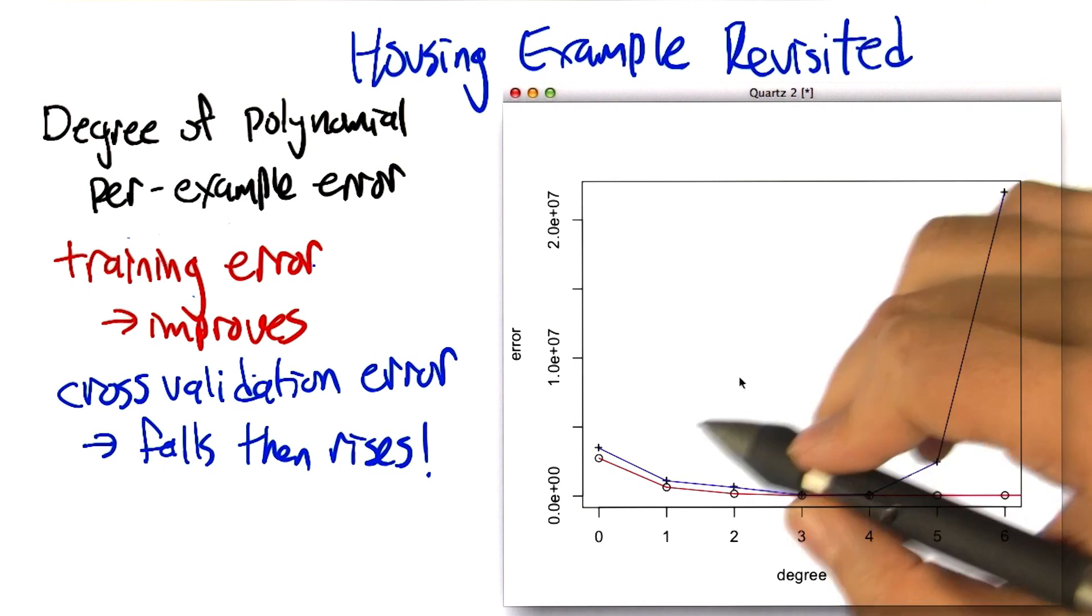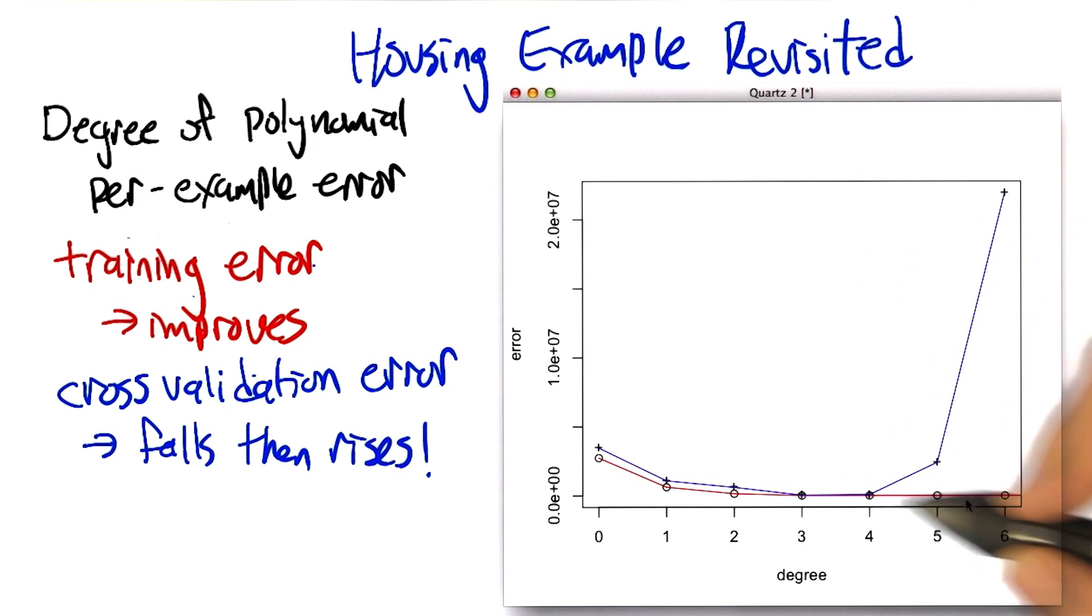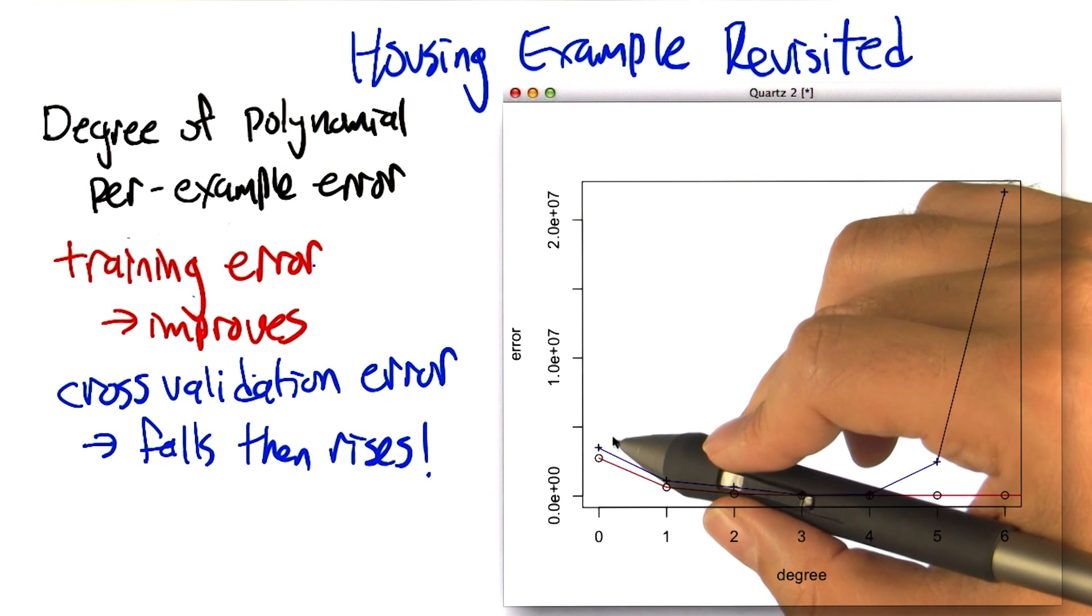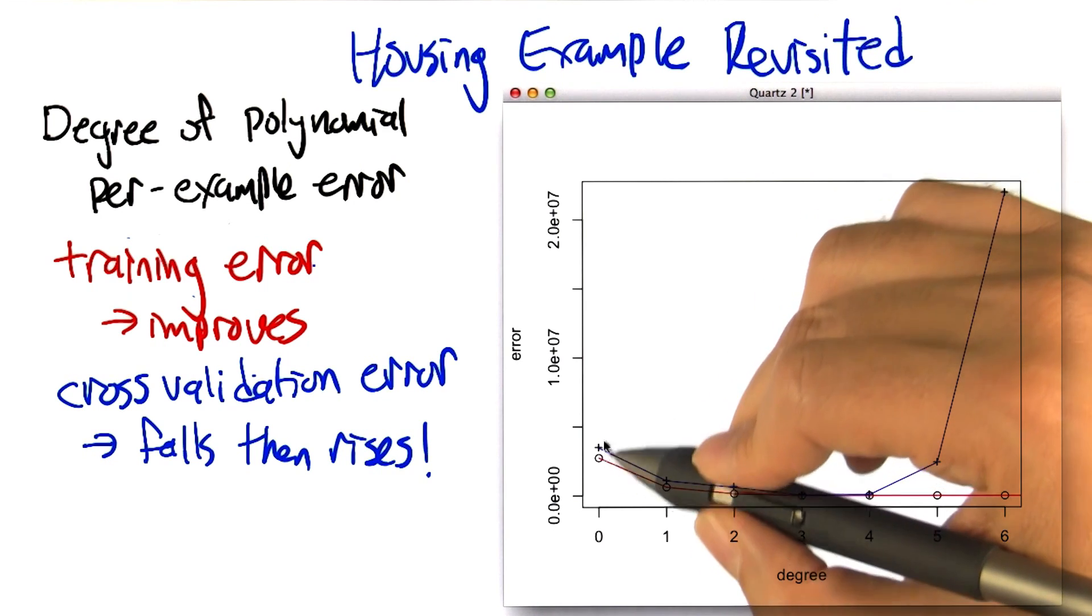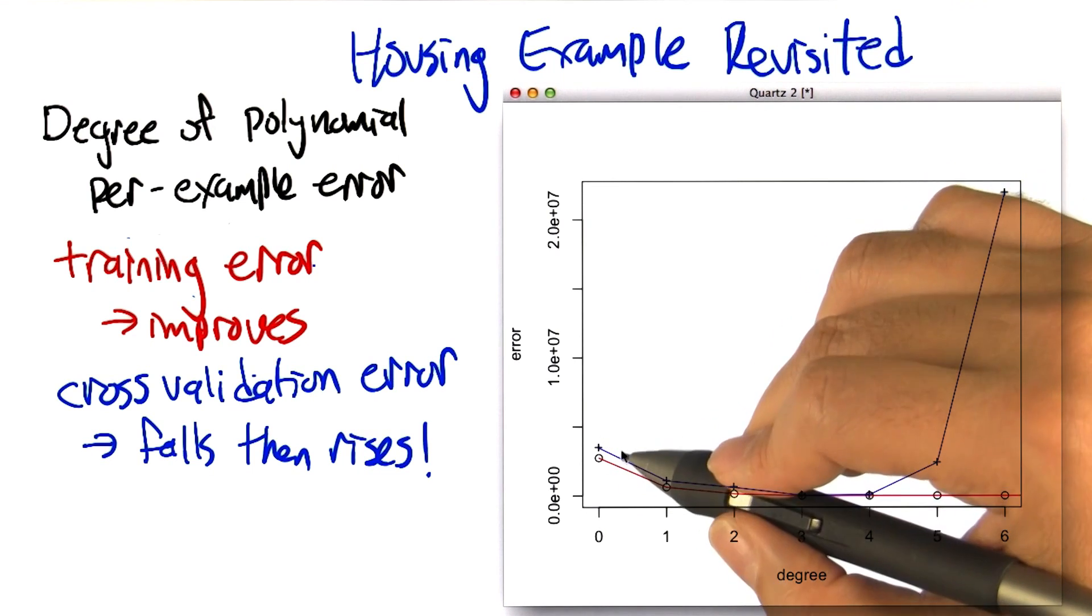So there's a couple interesting things to note about this plot. I have this red plot that is constantly falling, and the blue plot, which is the cross validation error, starts out a little bit higher than the red plot. So why do you think that is, Charles?